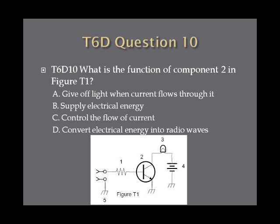Question 10. What is the function of component 2 in Figure T1? A. Give off light when current flows through it, B. Supply electrical energy, C. Control the flow of current, or D. Convert electrical energy into radio waves?